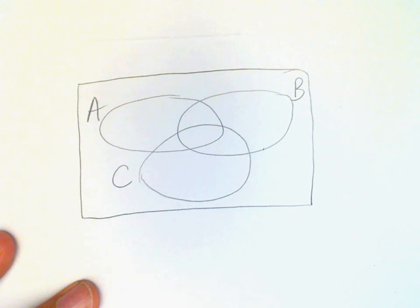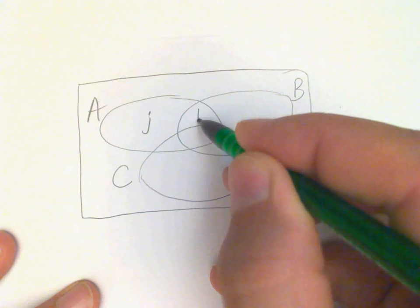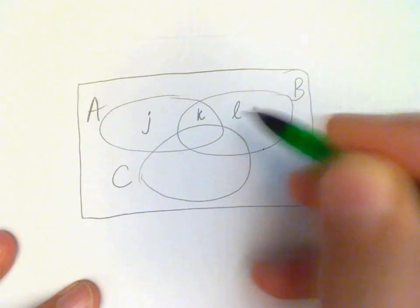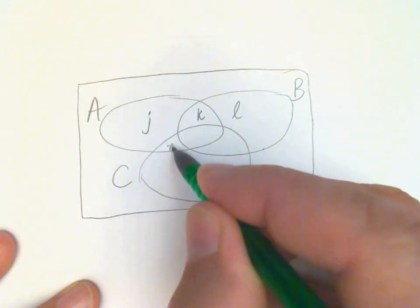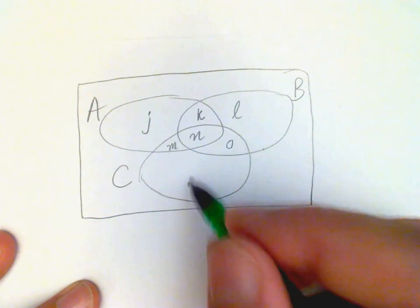And now I'm going to label each of the disjoint regions with a lowercase letter so that I can identify them as distinct. So we'll call this J, K, L, M, N, O, and P.